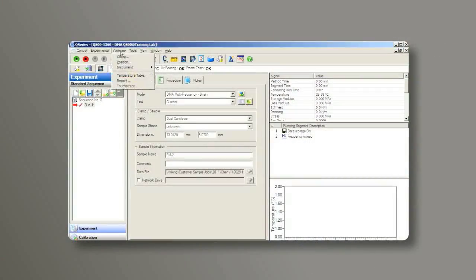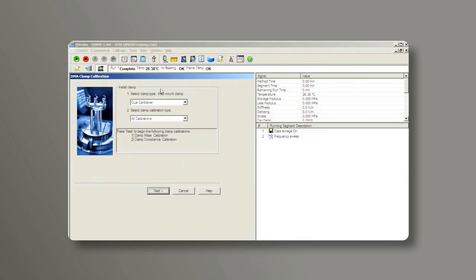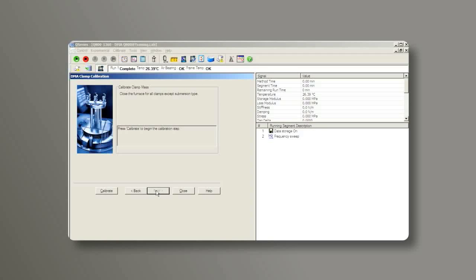From the control software, go to Calibrate, Clamp. Choose Dual Cantilever, All Calibrations, then Next. Close the furnace from the instrument touch screen, then click on Calibrate.